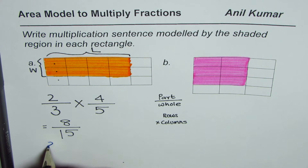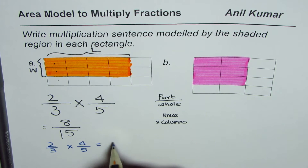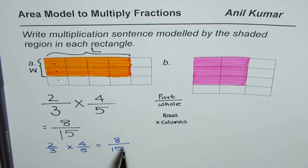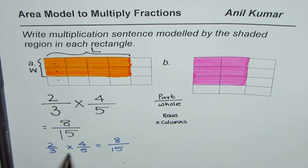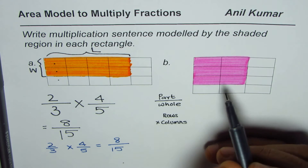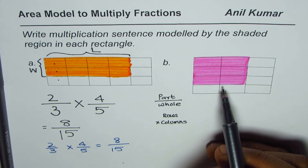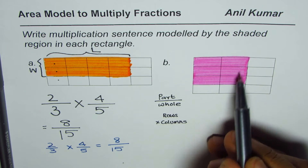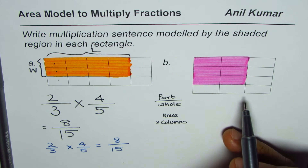So eight out of fifteen is the area of this rectangle — the portion shaded out of the whole is 8/15. That gives us the multiplication sentence: two out of three times four out of five equals eight out of fifteen. When we multiply, we multiply numerators together — 2 times 4 is 8 — and denominators together — 3 times 5 is 15. Sometimes these can be simplified and written in lowest terms.